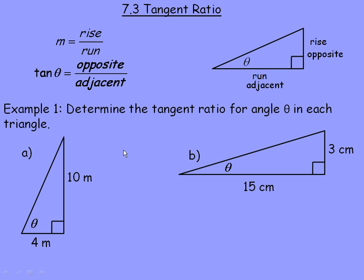In example 1, we're asked to determine the tangent ratio for angle theta in each triangle. In part A, here's the angle theta, and this side is 10 and this side is 4. Rewriting: tan theta equals the opposite side over the adjacent side. For this angle theta, the opposite side is the 10 — it's directly across from the angle — so 10 goes in the numerator. The 4 is the adjacent side because it's right beside the angle, so we substitute 4 in place of adjacent.